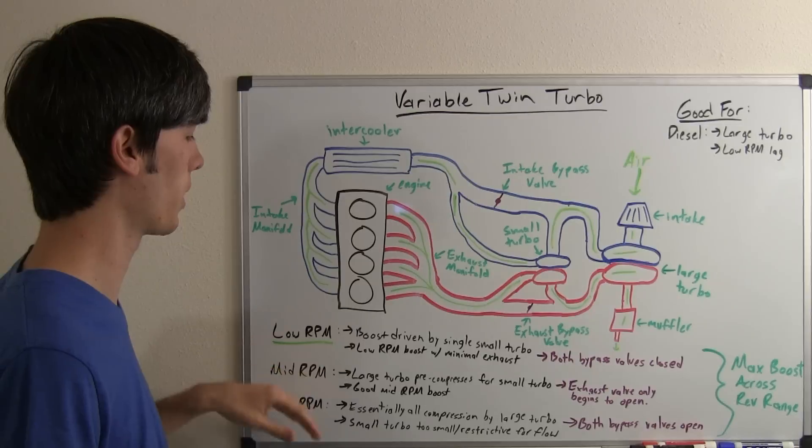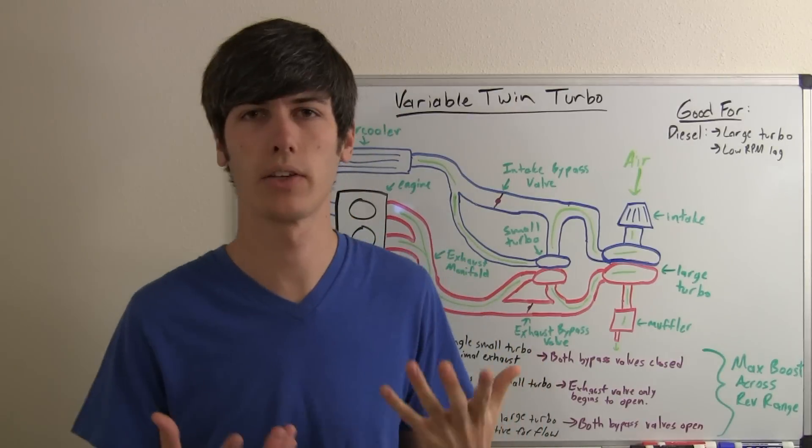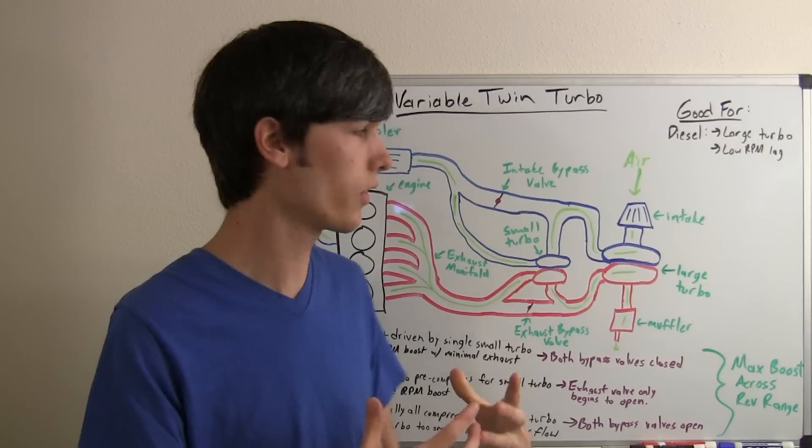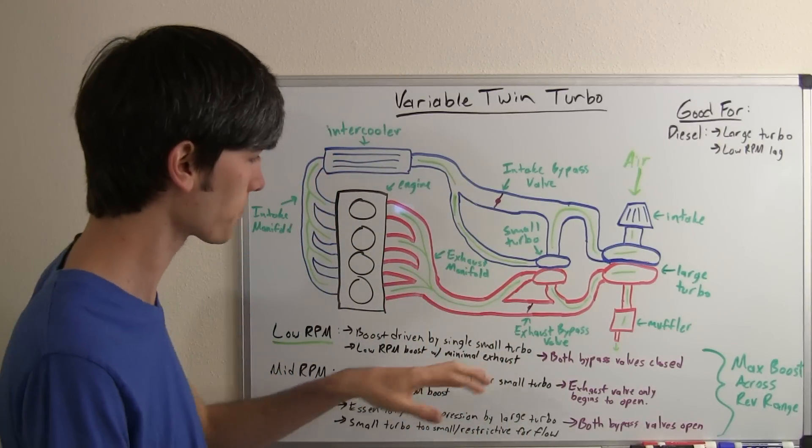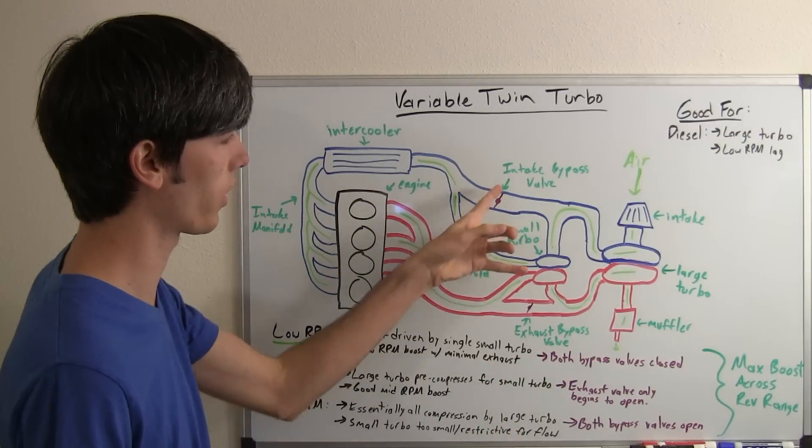At low RPM all of the boost is driven by the single turbo. You've got a limited amount of exhaust gases so you want to send them to a smaller area so you can increase the velocity of that exhaust gas and spool up this turbo and create boost. So how is that done? Well both bypass valves are going to be closed.